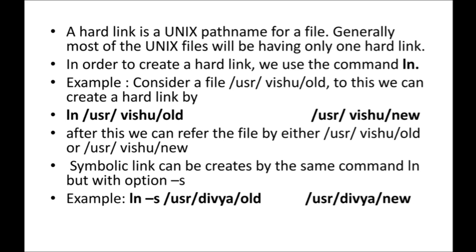The first slash represents the root directory — root is the parent directory, the first directory of any file system. Then you have to go to the user directory, then find the directory of user 'vishu', then you can find the file 'old'. This is the default path name of your file. When you create a file, only one hard link will be generated.